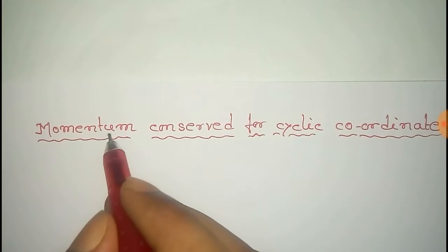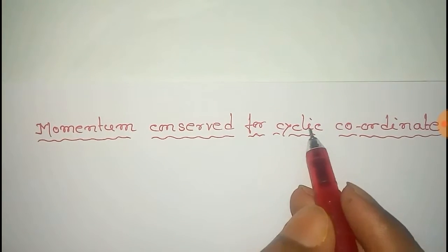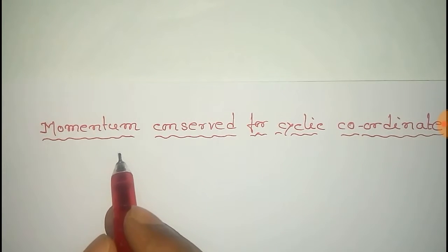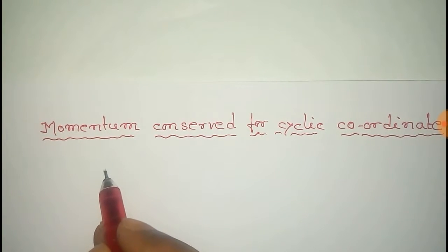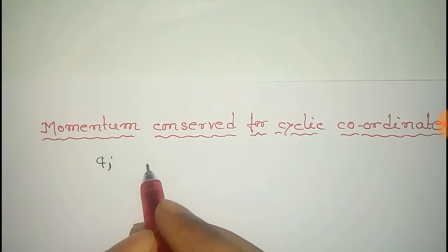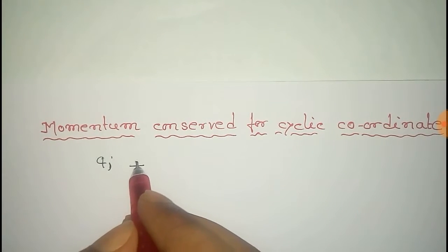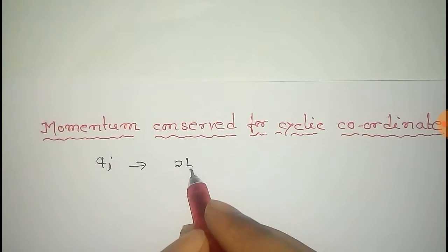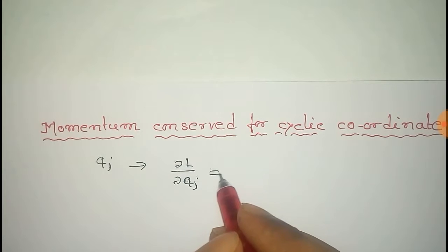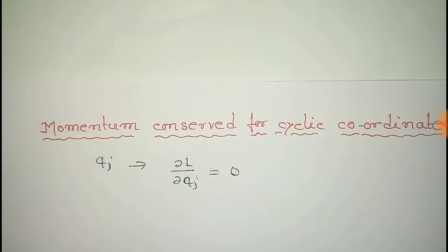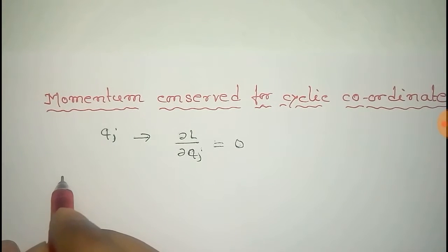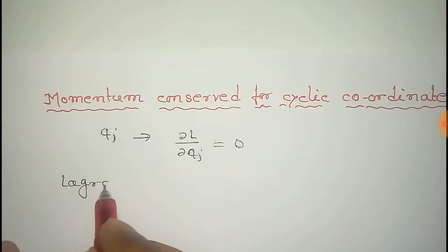Here we'll prove that momentum is conserved for cyclic coordinates. So if generalized coordinate qj is cyclic, then we have from the definition of cyclic coordinate that del L del qj equals zero. Now from the Lagrangian equation of motion...